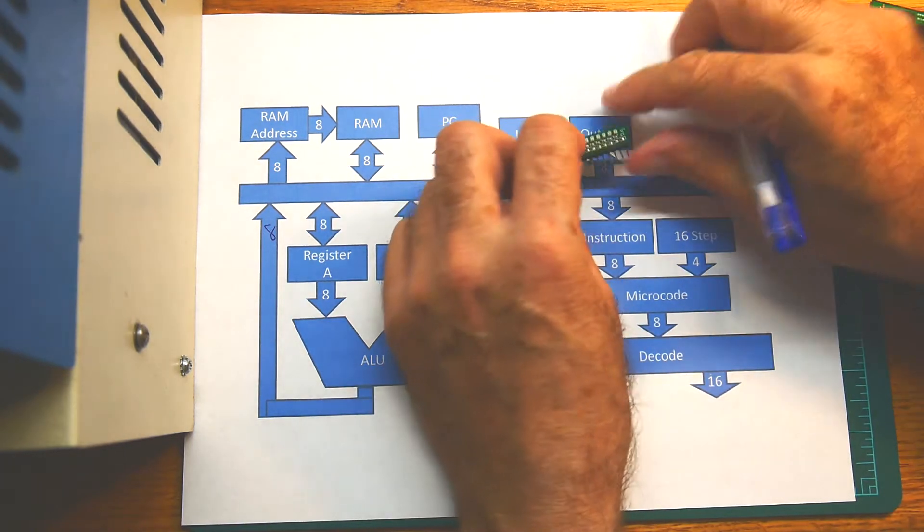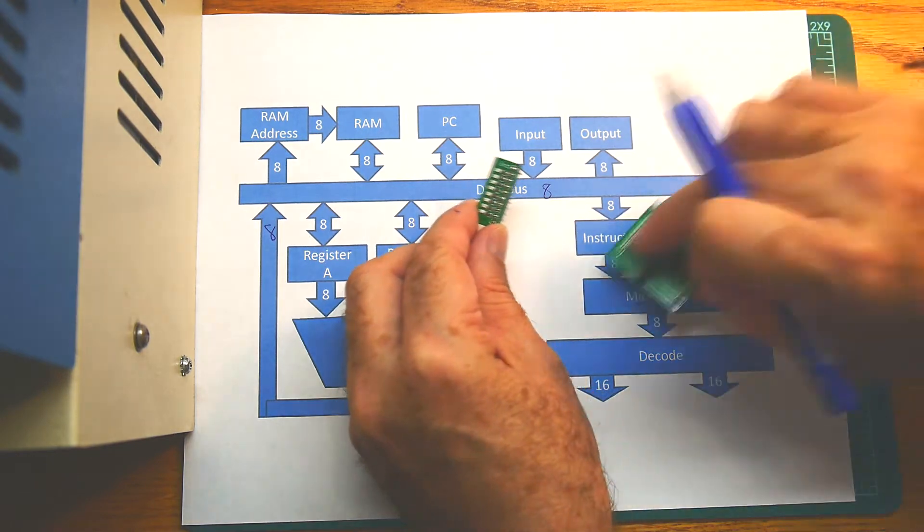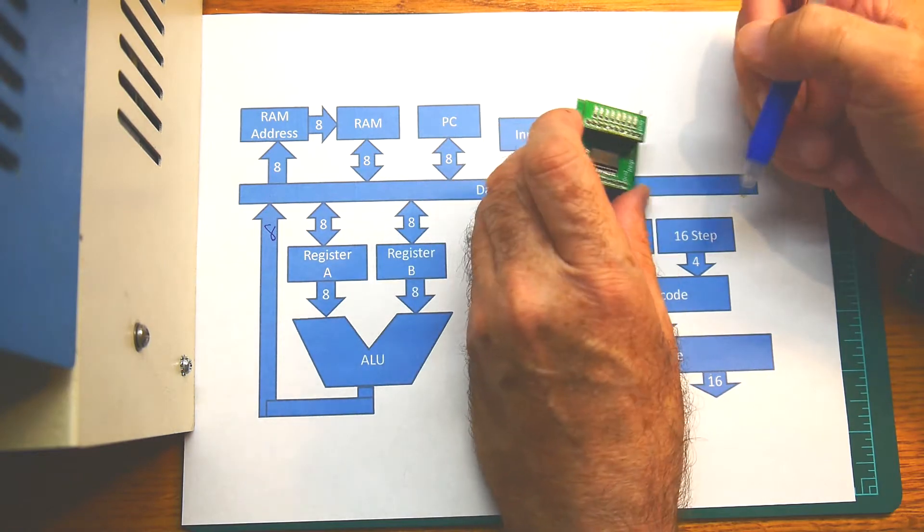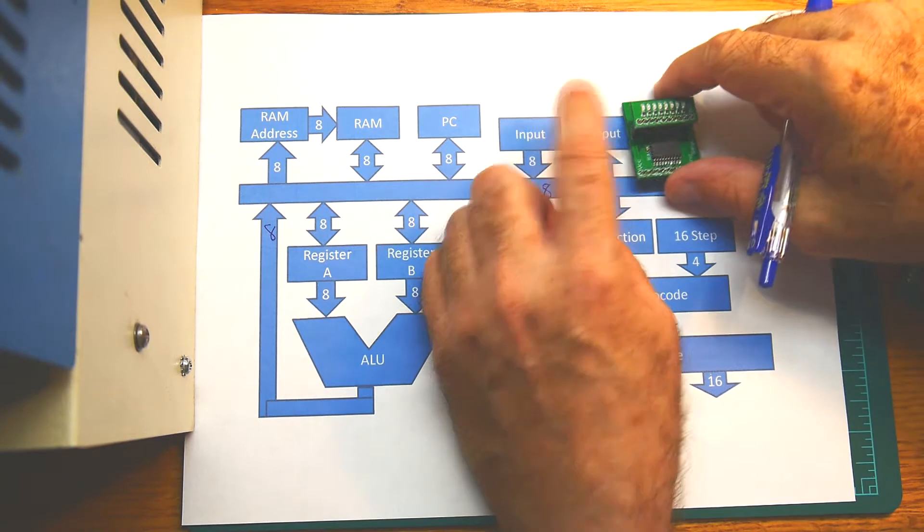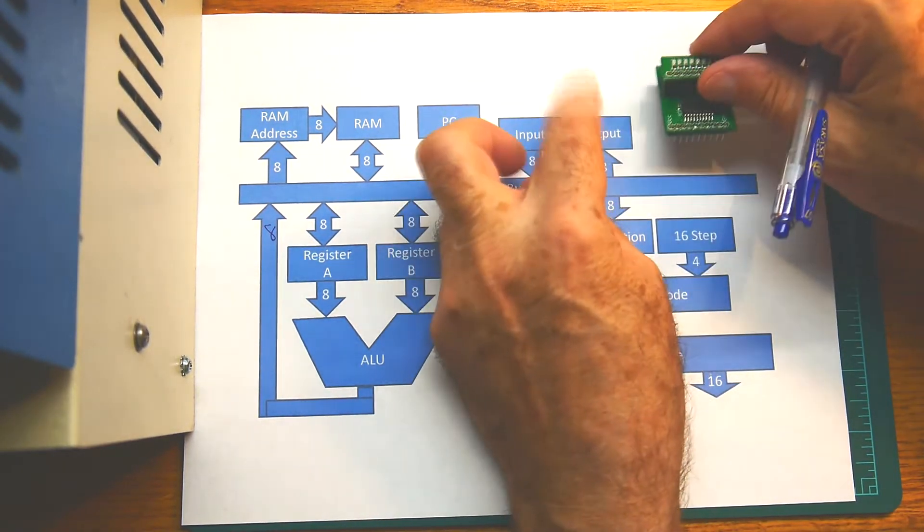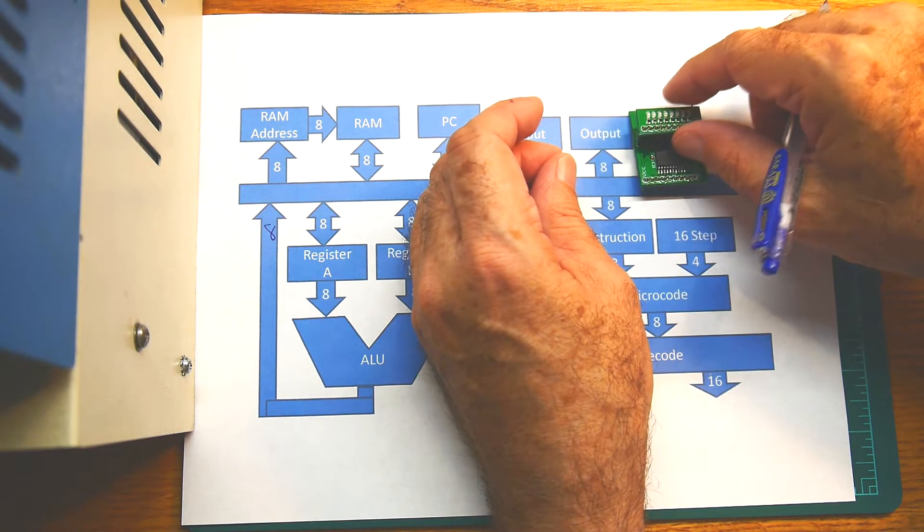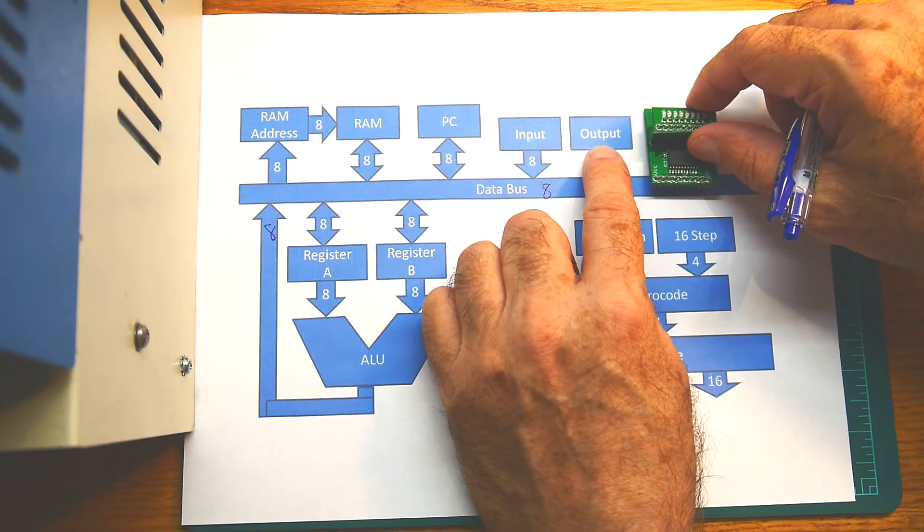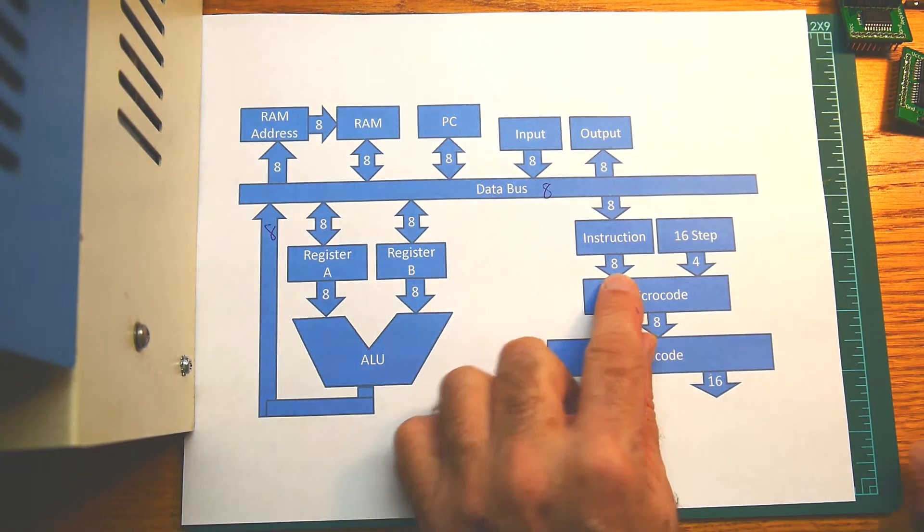We have the switches, which is our input device. We can just use an indicator board to look at things on the data bus, but we could just as easily create a register here that's output-only, so we can just output information. I've ordered some parts to make the output a little nicer. That's coming up, waiting for those to come in the mail. I'll give you a hint: it's something you've seen on the MSI channel before.